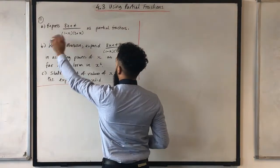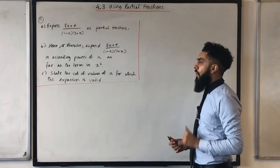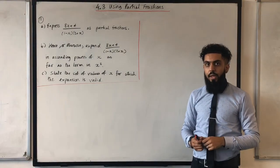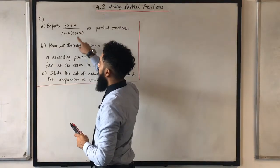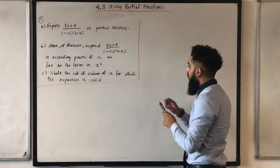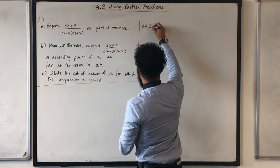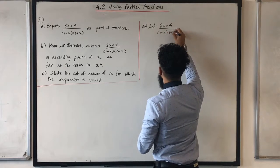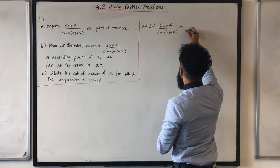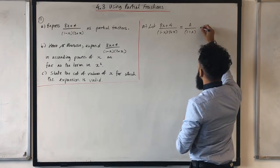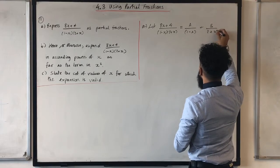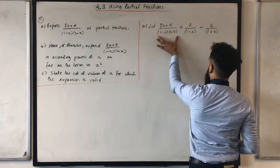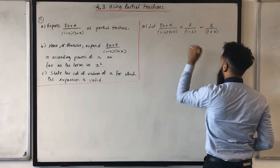Here's the first one — part A: express 8x plus 4 all over (1 minus x)(2 plus x) as partial fractions. If you look at my previous video tutorial, this particular fraction follows form 1. So I can first of all let 8x plus 4 over (1 minus x)(2 plus x) equal A over (1 minus x) plus B over (2 plus x). My next step is to obtain a common denominator, which is (1 minus x)(2 plus x).